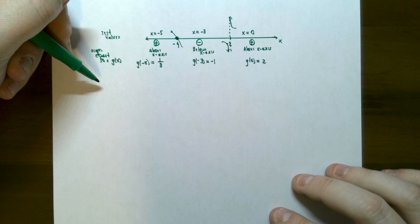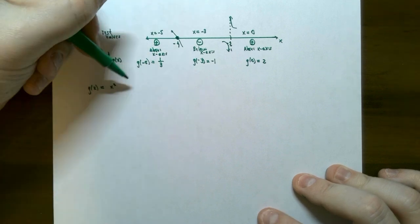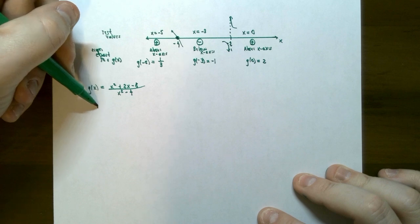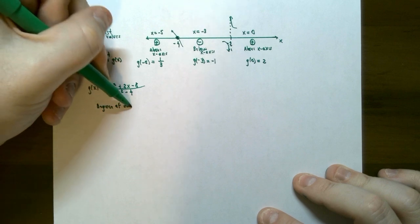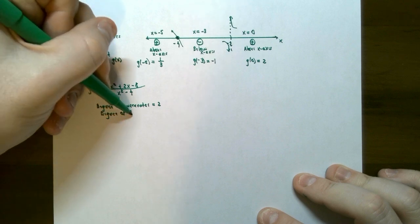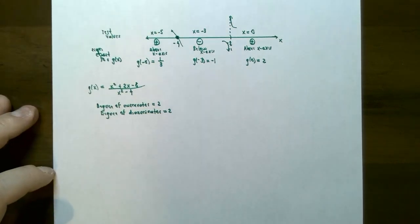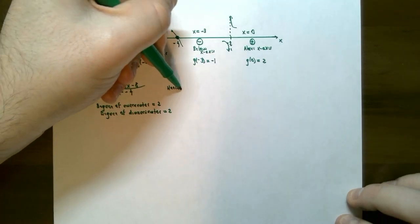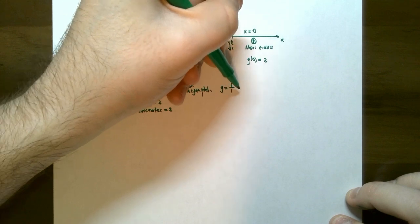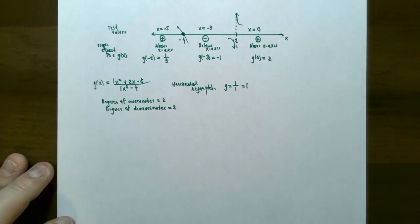Step five: find the horizontal asymptote. For g of x equals x squared plus 2x subtract 8 divided by x squared subtract 4, the degree of the numerator is 2 and the degree of the denominator is also 2. Since the degrees are equal, the horizontal asymptote is the ratio of the leading coefficients: 1 over 1, so y equals 1.